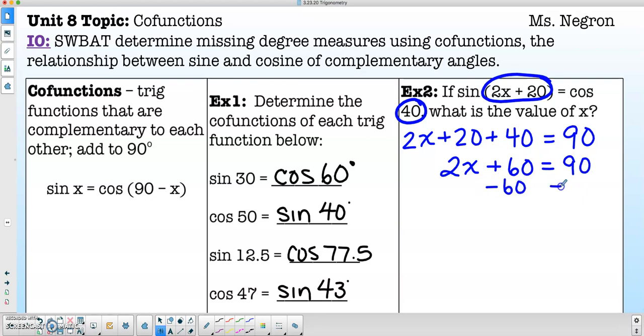Subtract 60 from both sides in order to get 2x is equal to 30. And then divide both sides by 2. Therefore, x is equal to 15.